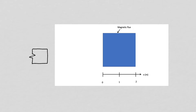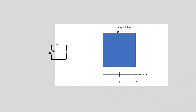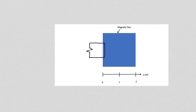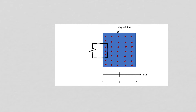As our circuit moves to the right, we want to focus on what is happening to the flux inside the circuit. At first there is no change in flux inside the circuit, but that changes as it starts to move into the magnetic field region. I'll depict the magnetic flux coming out of the page with dots. As the circuit moves in, it overlaps more and more area of magnetic flux.